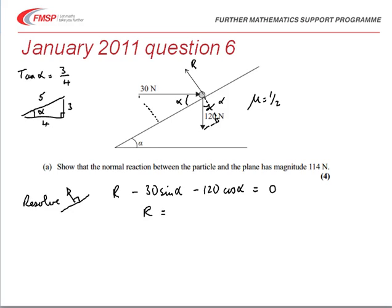Therefore R is 30 sine alpha, which is 30 times three over five, plus 120 cosine alpha, which is 120 times four over five. If you evaluate those you do indeed get 114 newtons.